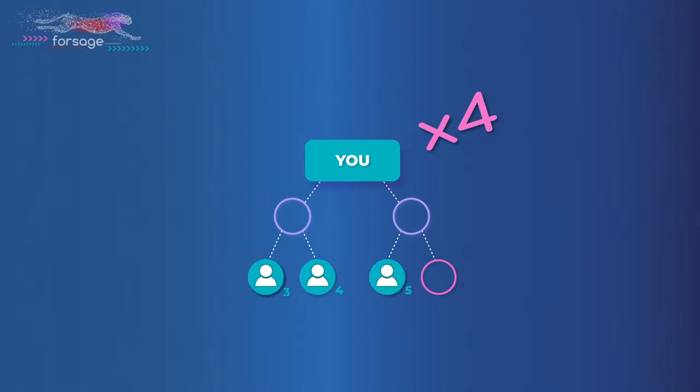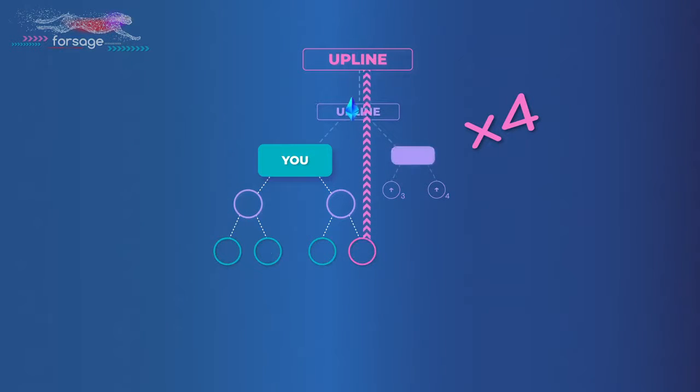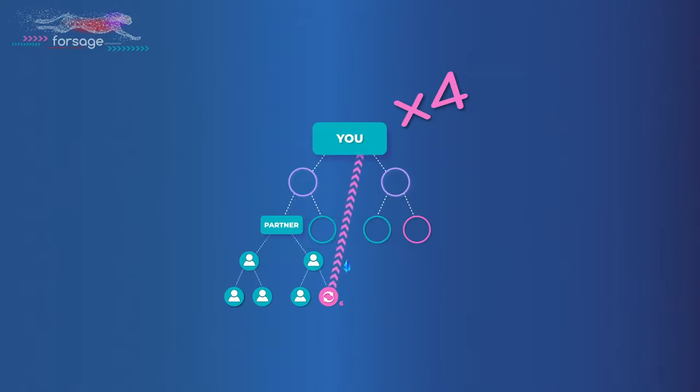In X4 we get income from the second line. Partners who occupy two places below you in the first line are two places in the second line of your upline. 100% payment goes to the wallet of your higher partner. You also receive income from the second line. 100% from four partners. Three payments of 100% are instantly sent to your wallet. The last payout closes the slot and it reinvests, buying you the same slot again. Your partners also go for reinvestment. And 100% of the payment for the last place of their slot is transferred to your wallet.